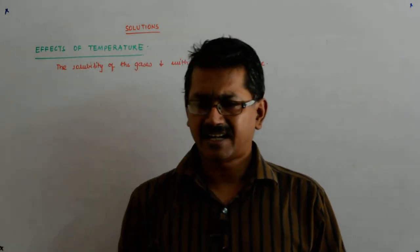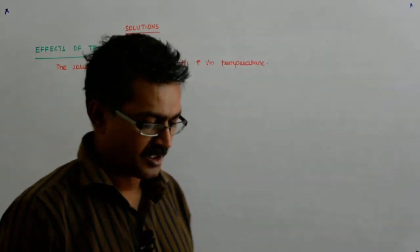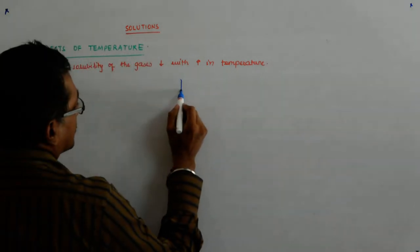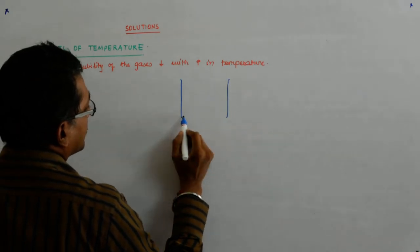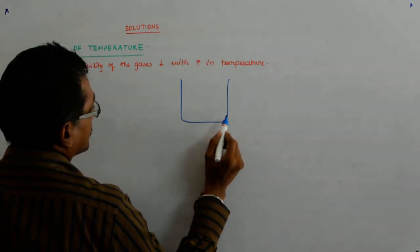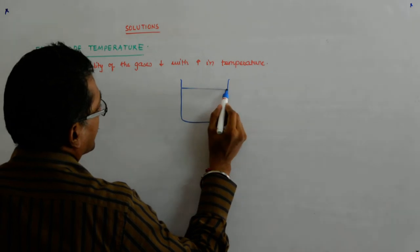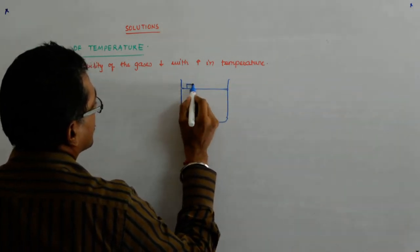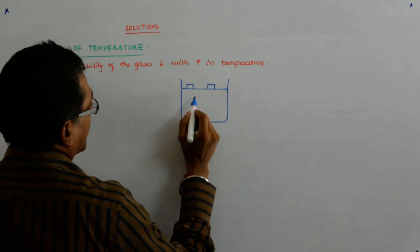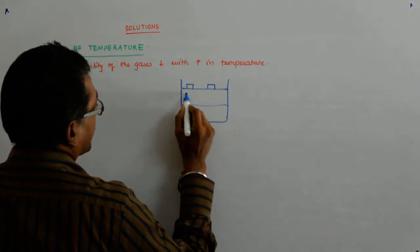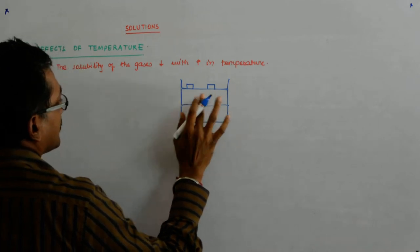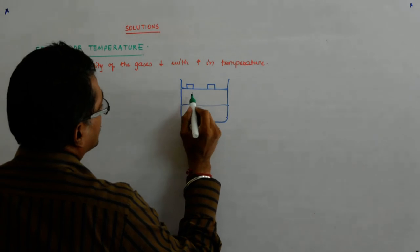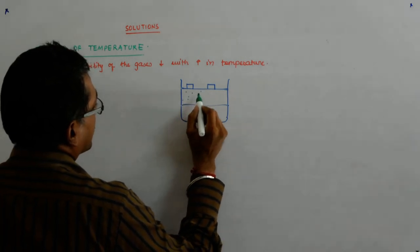Now let us try to understand what happens. You have gases, you have the gas under pressure, this is the liquid part of it and you have gases here. Say the green dots are gases. They are gas molecules.